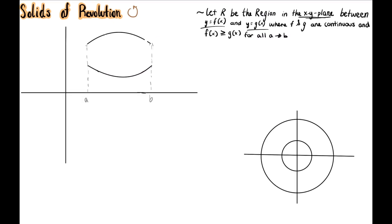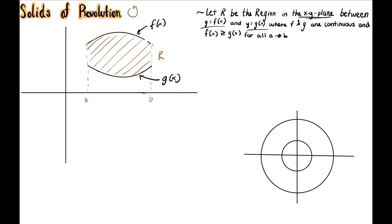Let's look at a special case. Say we have region R between A and B, bounded on the top by f of x and bounded on the bottom by g of x. From A to B, f of x is greater than g of x, and they both have to be continuous on this interval. Say a problem is asking for the volume of solid S of this region rotated across the x-axis.